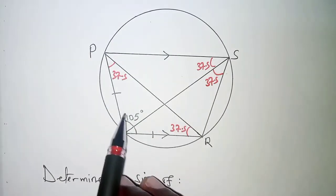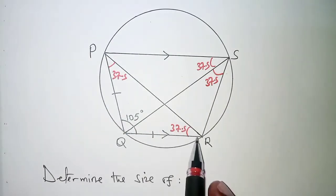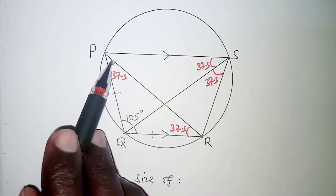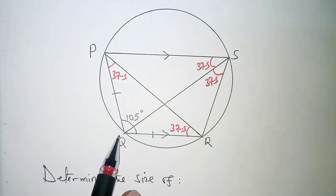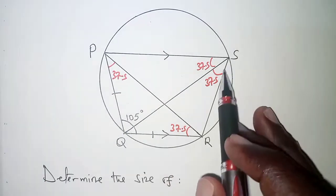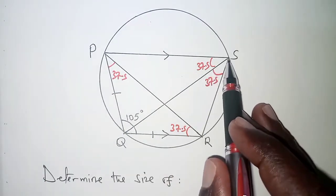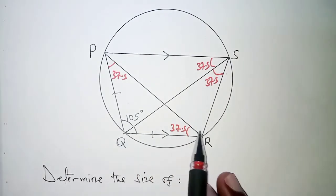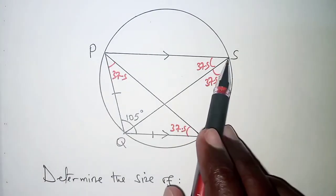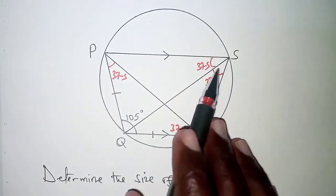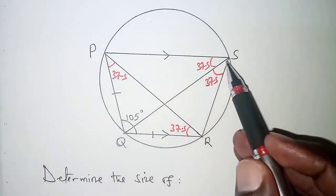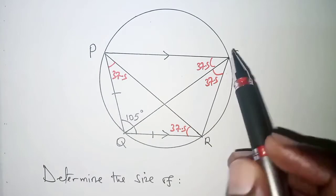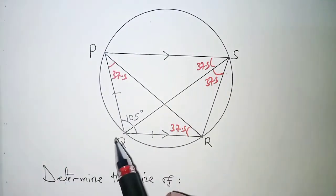Another thing we would have done we have chord QR. Chord QR was subtending angle 37.5 at this point and it also subtends the same angle at point S. So we have same chord subtending same angles at the circumference on the same side of the chord. So chord QR subtends angle 37.5 here and here as shown.